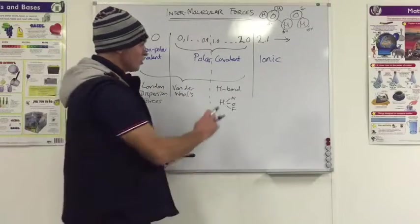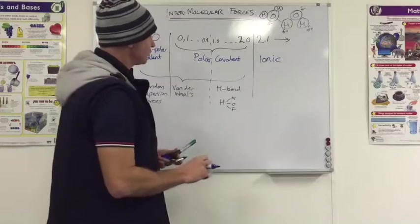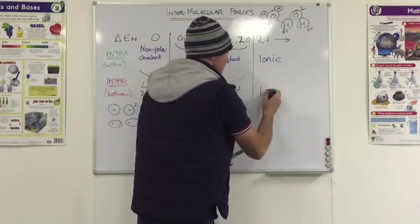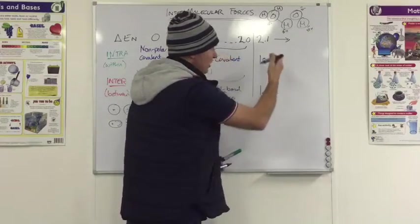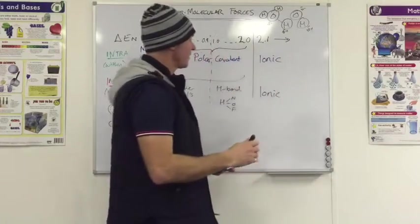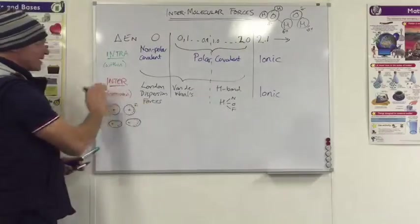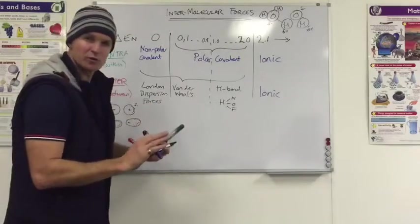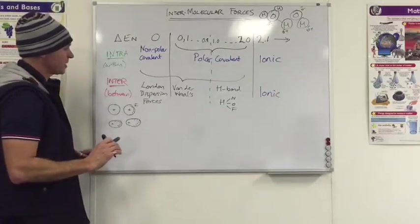So those, and once again, beyond 2.1, we end up with a crystal lattice structure where it's all just ionic, sodium plus, chlorine minus, sodium plus, chlorine minus, and so on. So the intermolecular for those, as it were, would also be ionic.